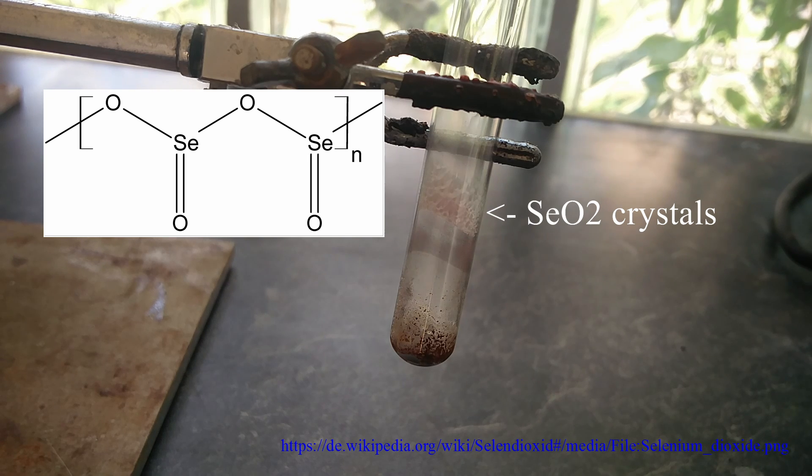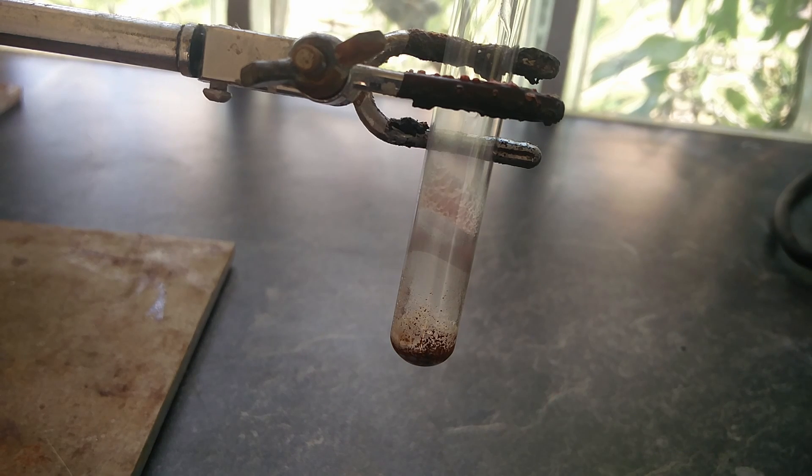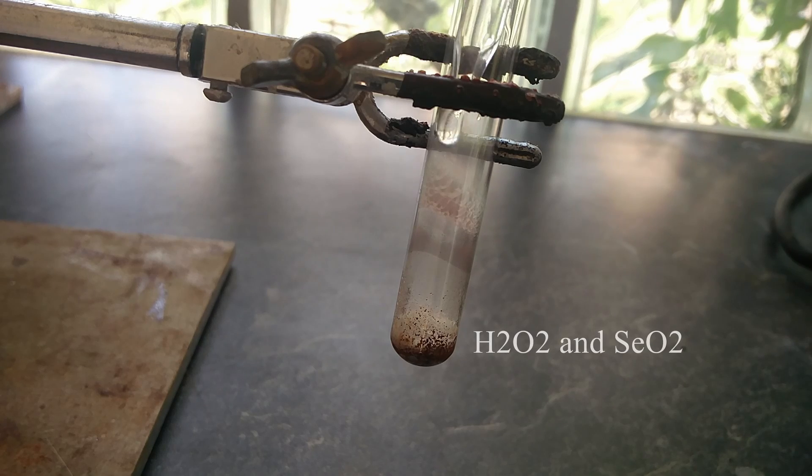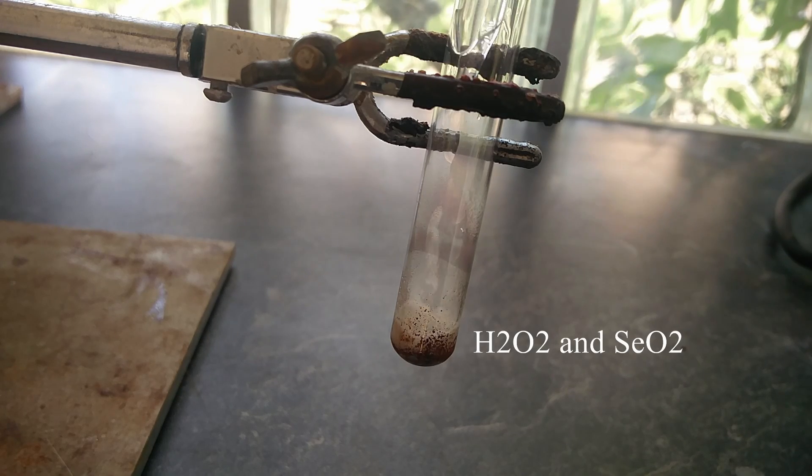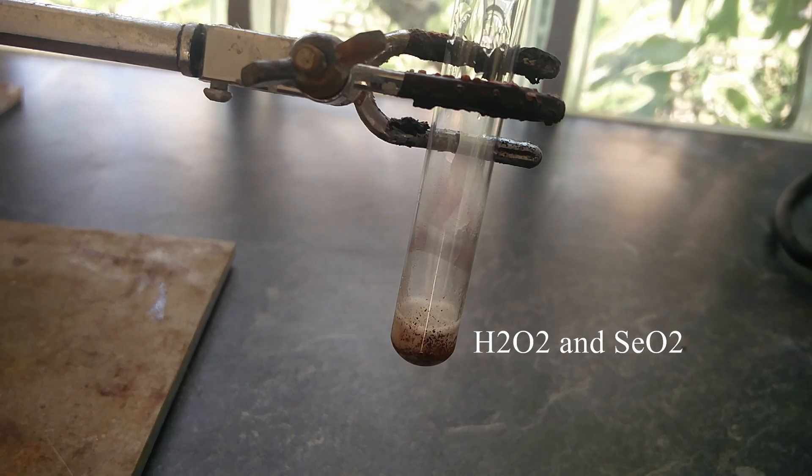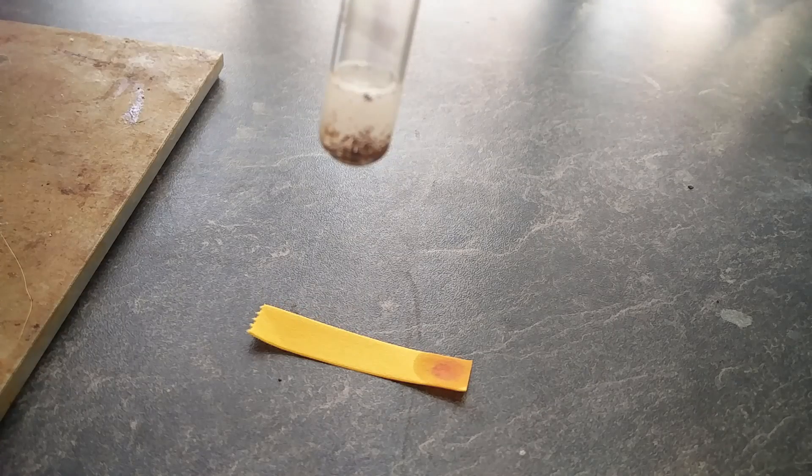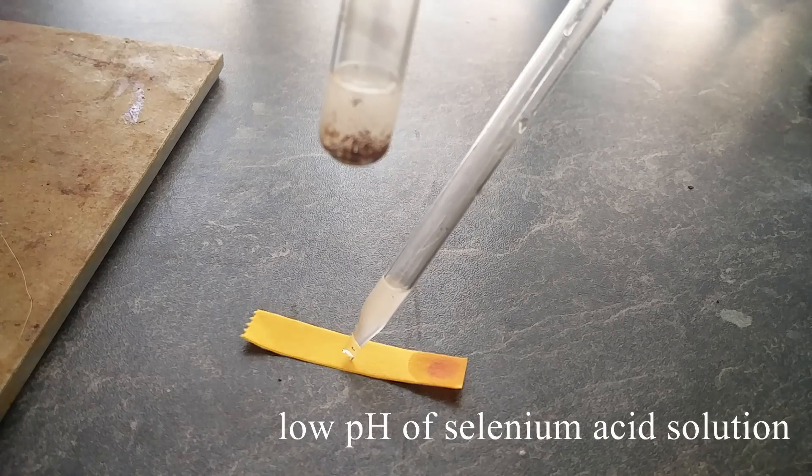It is water-soluble and forms selenic acid. With hydrogen peroxide, this can be oxidized to selenium acid, which has high oxidizing power and can ignite alcohols or even dissolve gold or platinum metal just like aqua regia.